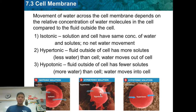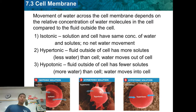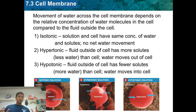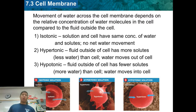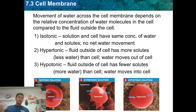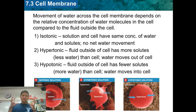The next one is hypertonic — when there's more salt outside the cell. For example, when you eat a lot of pizza you get really thirsty because pizza is very salty. There's a lot of salt on the outside of your cells, so water leaves your cells. Your body wants more water to replenish what the cells have lost, and the cell actually shrinks because water is leaving.